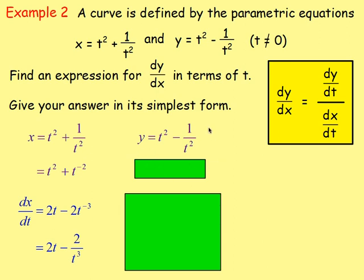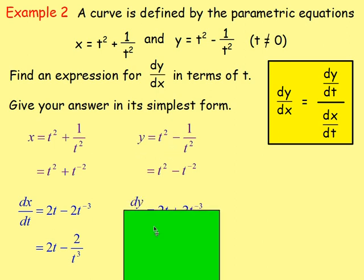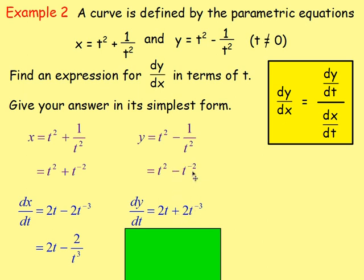Do the same with y. Differentiating t squared minus 1 over t squared — rewrite 1 over t squared as t to the power of negative 2 before differentiating. Differentiating y with respect to t gives dy/dt: differentiate t squared to get 2t, then differentiate negative t to the power of negative 2 — bring the power down, giving plus 2t to the power of negative 3. Rewriting with positive indices: dy/dt equals 2t plus 2 over t cubed.